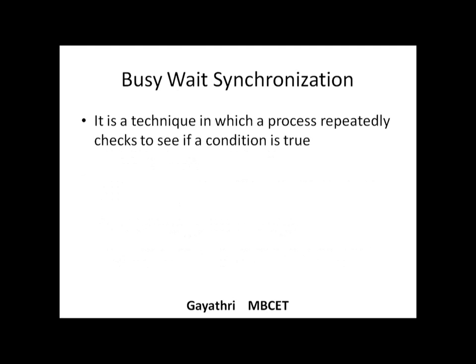The first category of synchronization is called busy-wait synchronization. Under this we have two categories: mutual exclusive locks and barriers. Busy-wait synchronization, or spinning, is a technique in which a process repeatedly checks to see if a condition is true. If the condition is true, the process can enter the critical region; otherwise it keeps spinning until the condition is true.